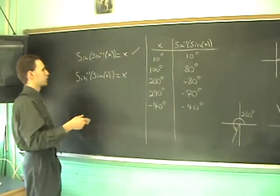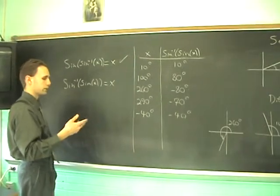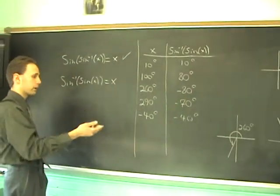If you take a number between minus one and one, you take the sine inverse, that's going to give you an angle, and then you take the sine of that angle, it's going to give you the number that you started with.